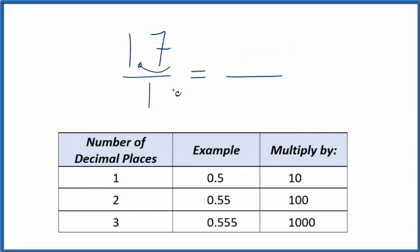Next, because we have one decimal place here, we're going to multiply by 10. So we'll multiply 1.7 times 10.